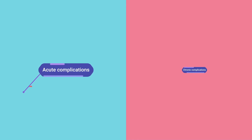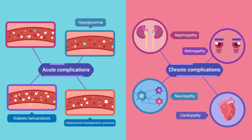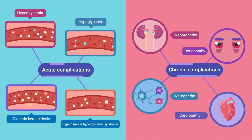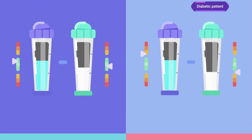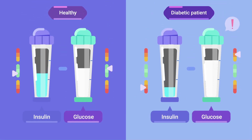The complications of diabetes can be of two types: acute and chronic complications. Acute complications of diabetes occur when blood glucose levels fall outside of normal range.